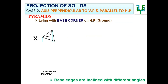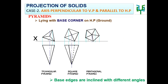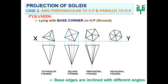While resting with its base corner, two base edges may also have different inclinations to HP or the XY line. Examples include: Triangular pyramid, Square pyramid, Pentagonal pyramid, and Hexagonal pyramid.